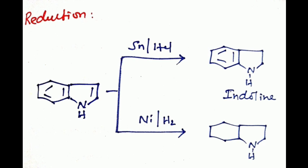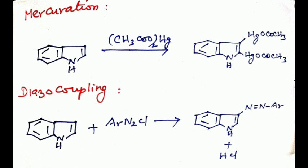Then reduction. Indole can be reduced with tin with HCl or zinc with orthophosphoric acid or copper chromite to form 2,3 dihydro indole, that is indoline as a product. Whereas indole reduced with Raney nickel forms octahydro indole.